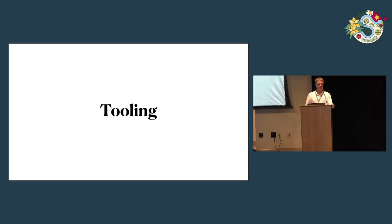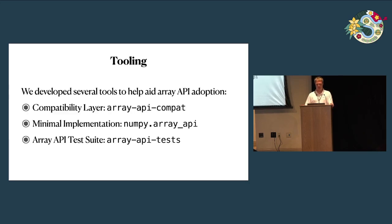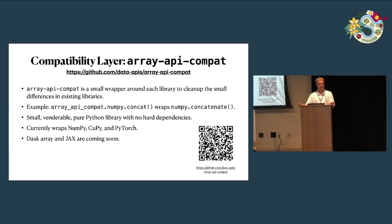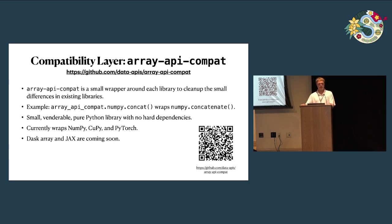In addition to the specification itself, we've also built some tooling to help with adoption. There are three big pieces of tooling. The first is the compatibility layer, which I mentioned earlier. This is what you'll be using right now if you want to actually use the array API as an array consumer. It's a small, pure Python library that wraps the various array libraries to clean up the little differences that exist between them and the specification. For example, the specification uses concat, and NumPy calls it concatenate — so array_api_compat.numpy has a concat wrapper that just wraps concatenate. It's vendorable and currently wraps NumPy, CuPy, and PyTorch. Dask array and JAX support should be coming soon.